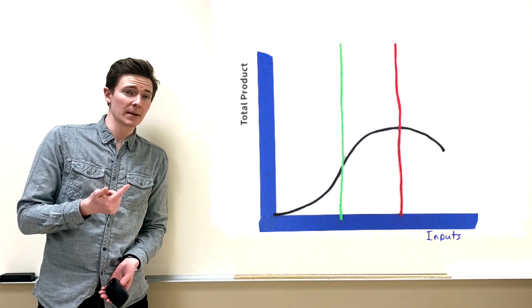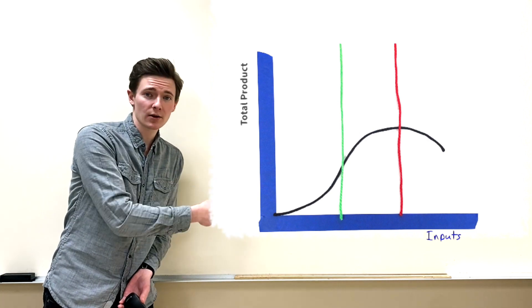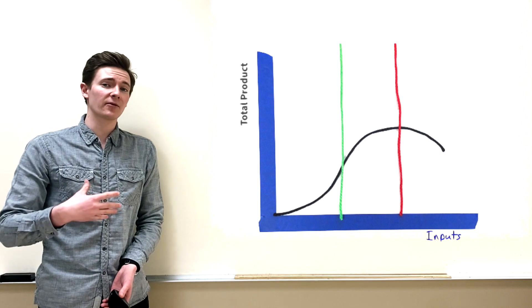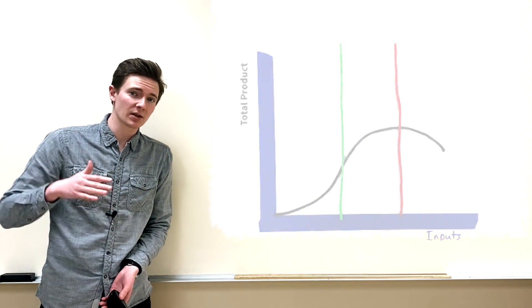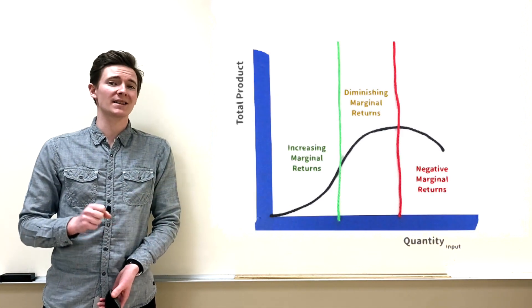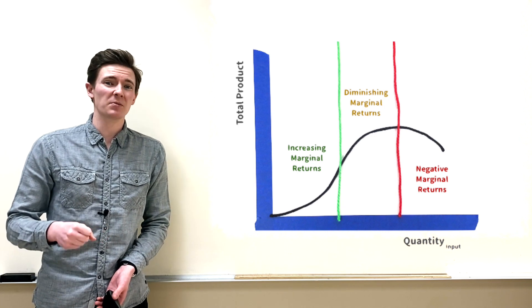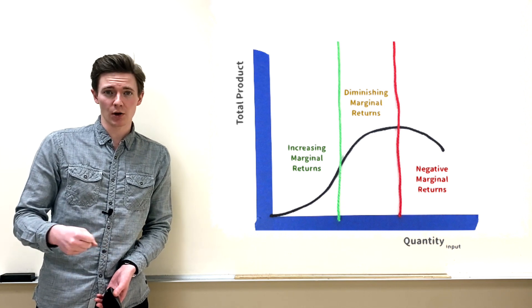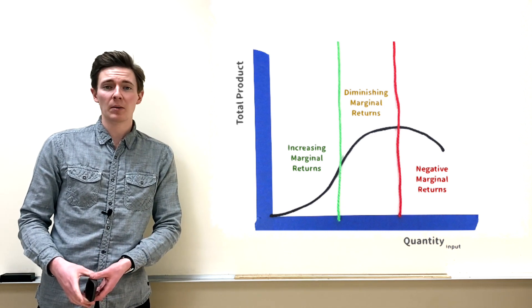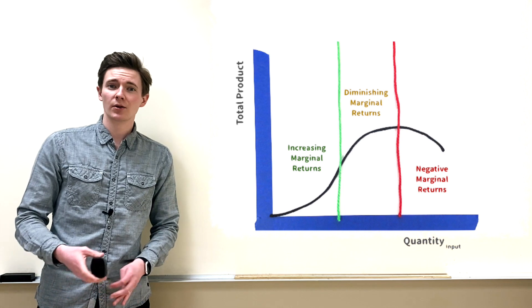Then there's a point where the slope actually becomes negative all the way on the right. The first segment, where the slope is getting steeper, represents increasing marginal returns. The next segment represents diminishing marginal returns, and the last segment represents negative marginal returns.